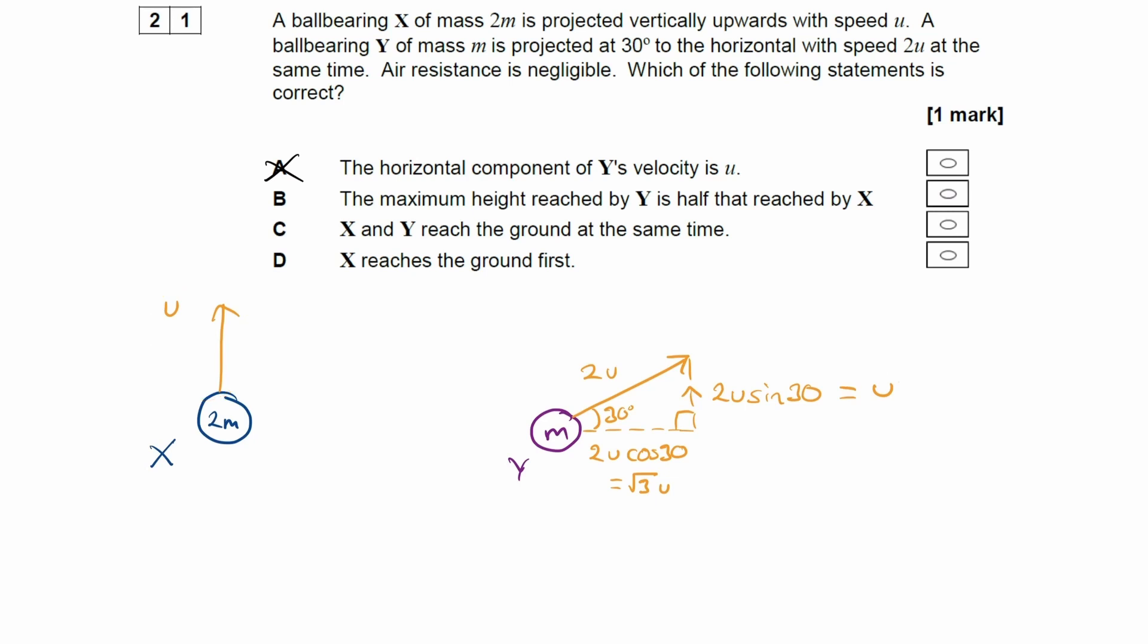So that means that vertically, they do the exact same thing. They travel to the same maximum height. They take the same time to go from the floor all the way up and then back down. So for that reason, it can't be B. The maximum height of Y is not different to that of X.